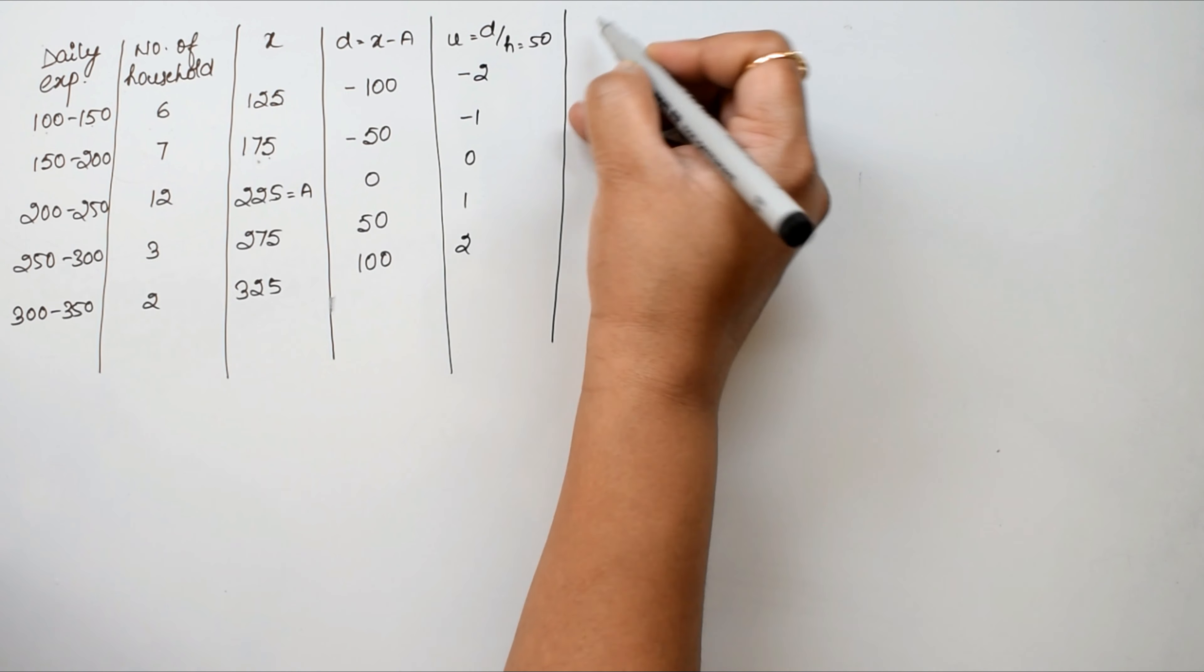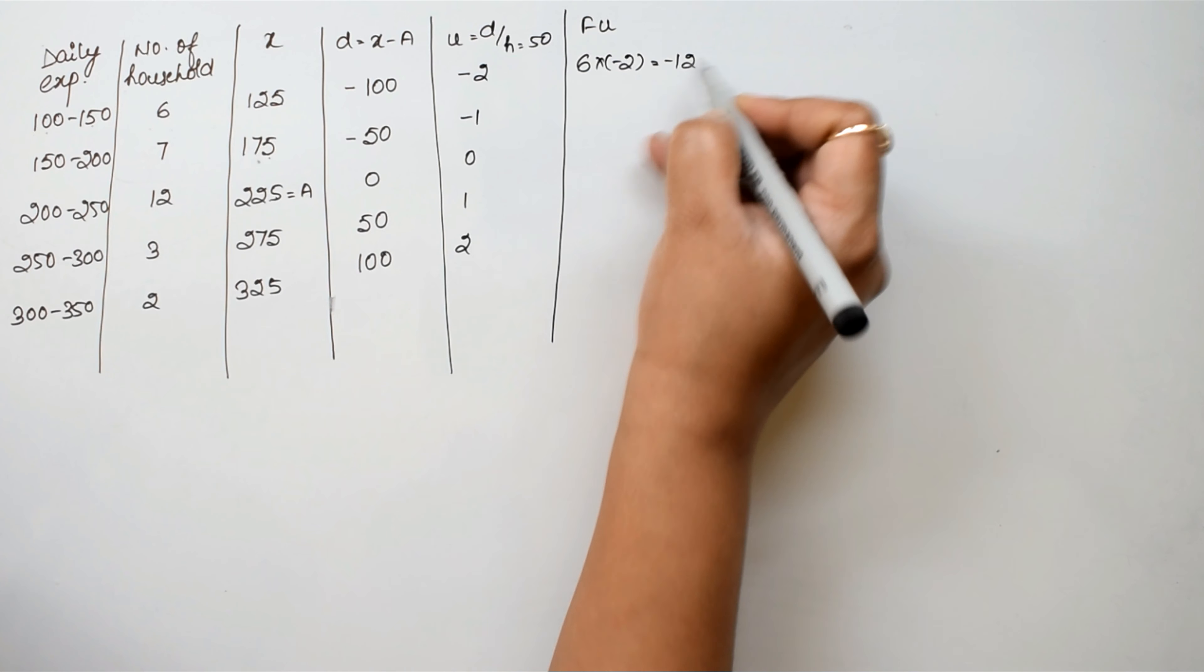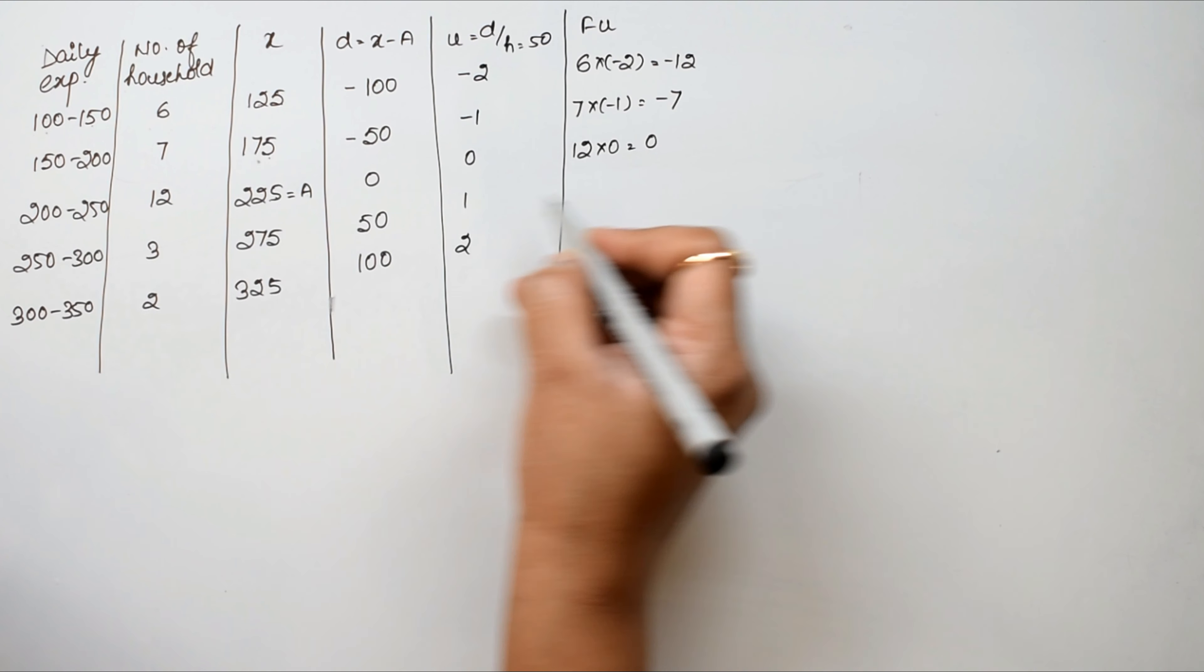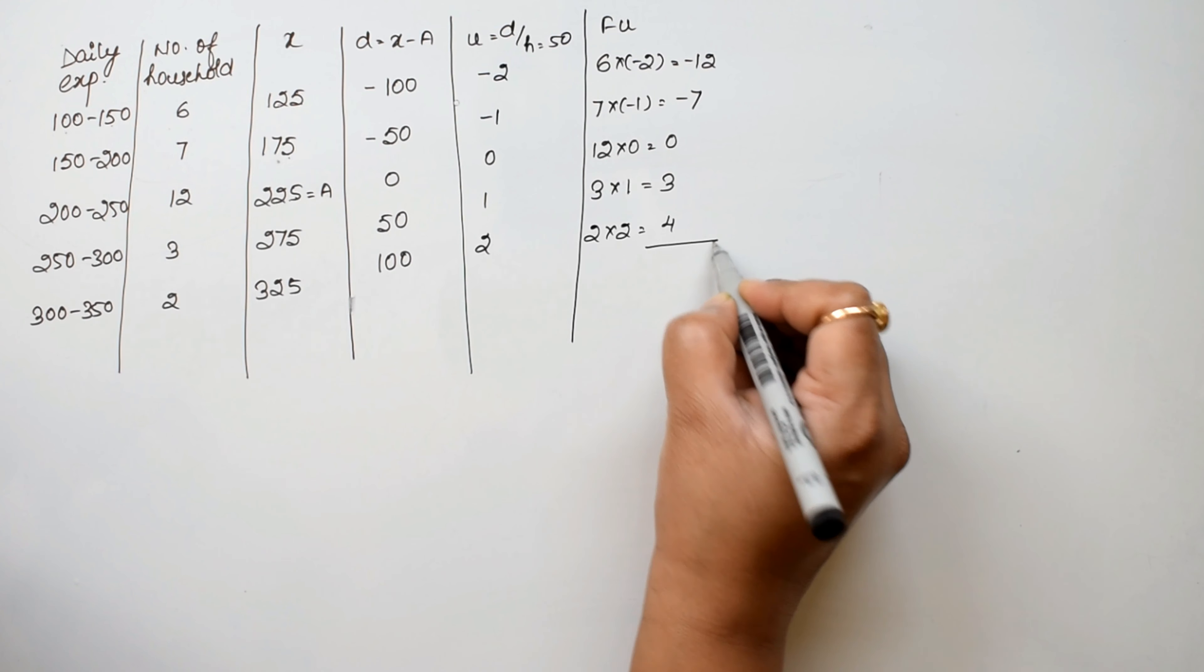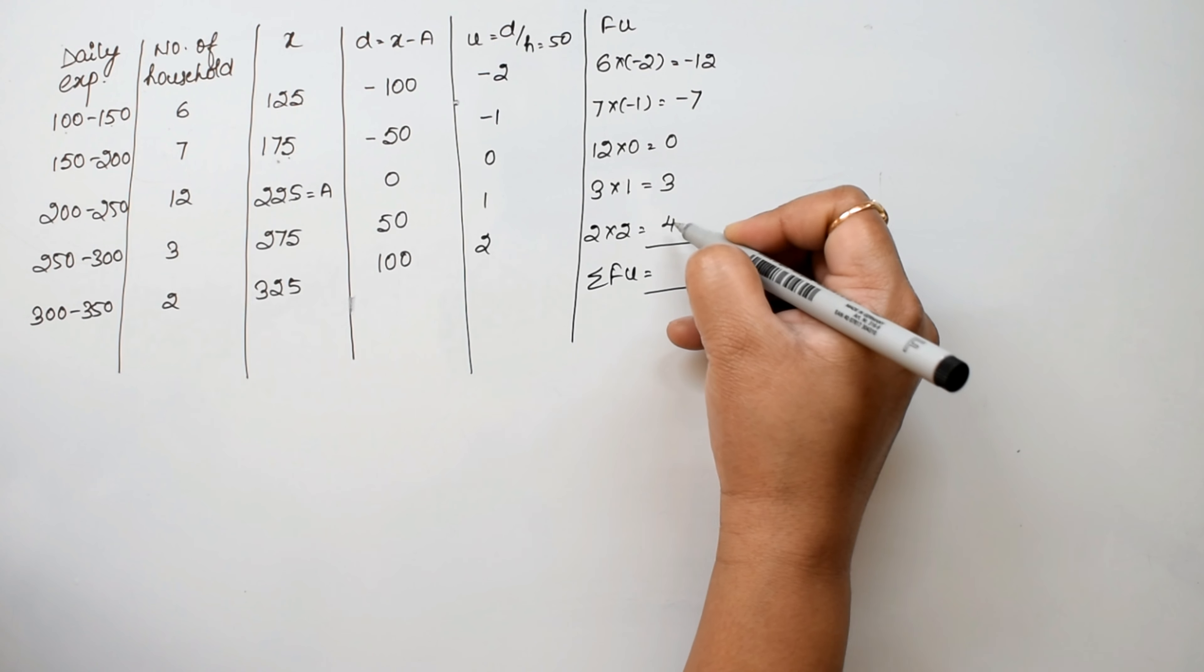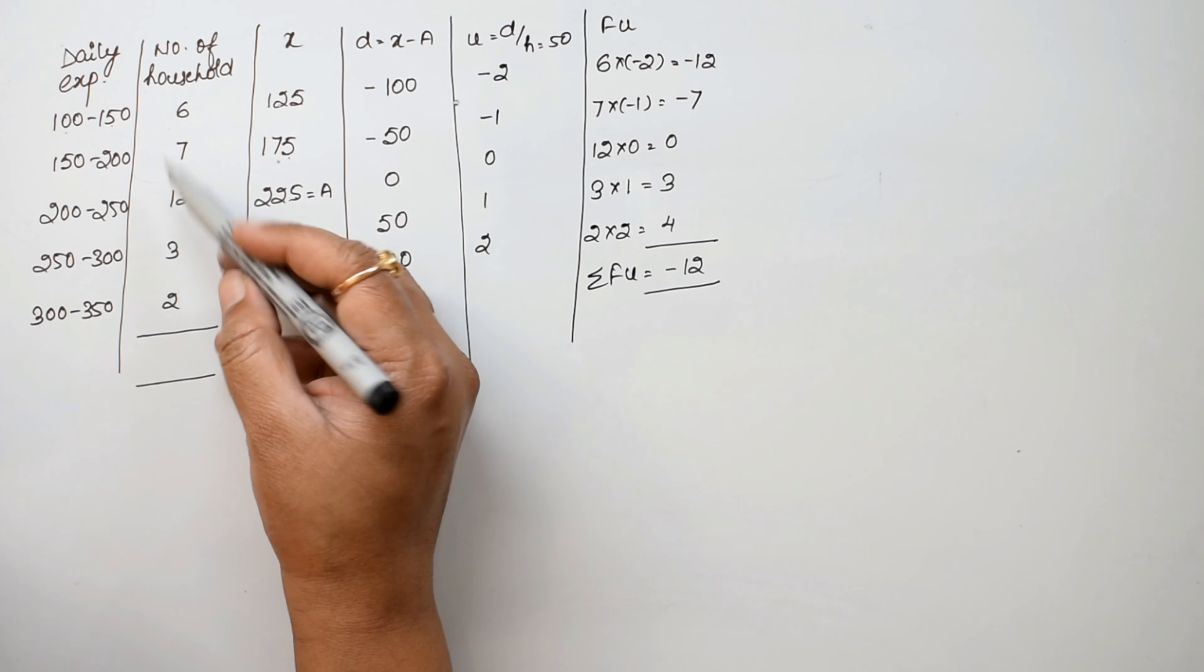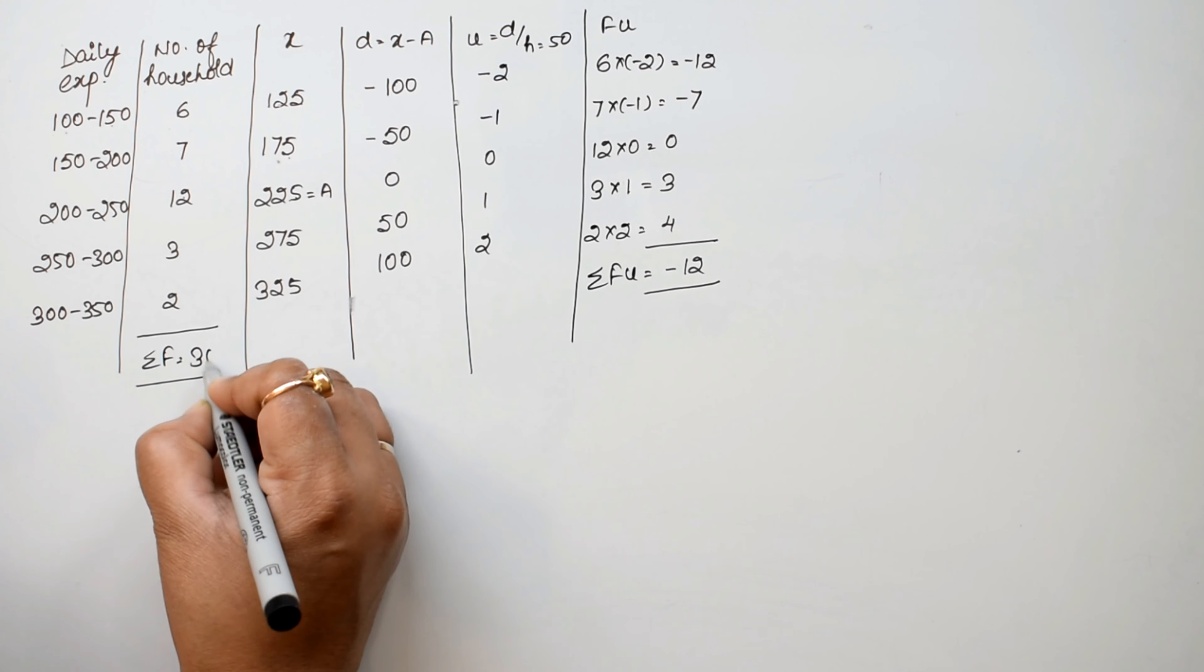Now we calculate FU using step deviation. 6 into minus 2 is minus 12. 7 into minus 1 is minus 7. 12 into 0 equals 0. 3 into 1 is 3. And 2 into 2 is 4. Summing these up: minus 12 plus 7 is minus 5, then cancel and add to get sigma FU equals minus 12. And sigma F is 30.